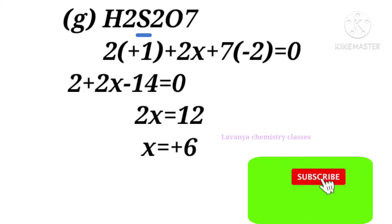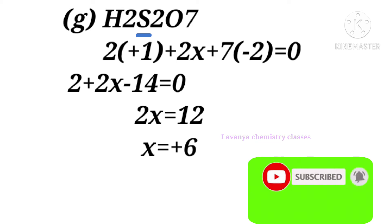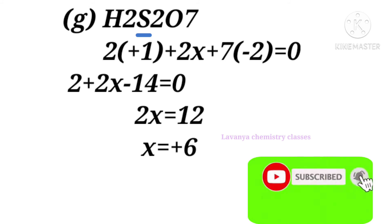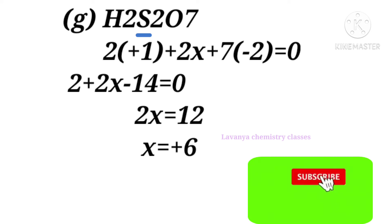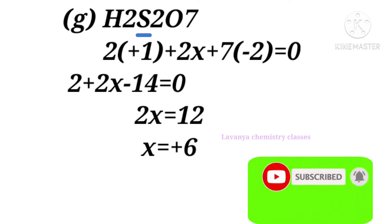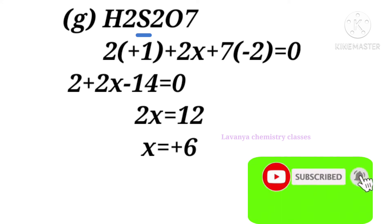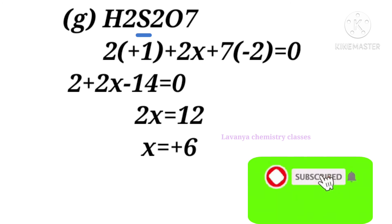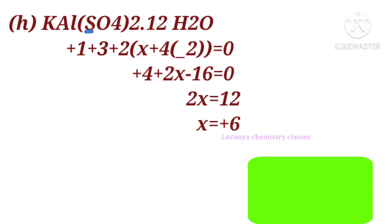The next problem is H₂S₂O₇. We have to find the oxidation number of sulfur. Let sulfur be x. So: 2×(+1) + 2x + 7×(−2) = 0, giving 2 + 2x − 14 = 0, so 2x = 12 and x = +6. The oxidation number of sulfur in H₂S₂O₇ is +6.